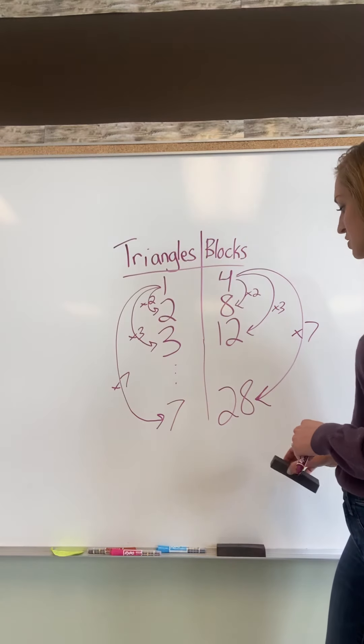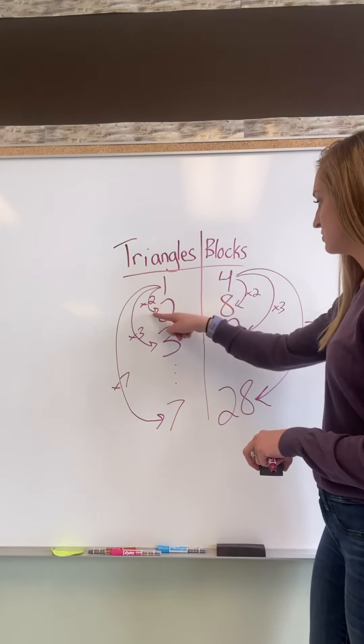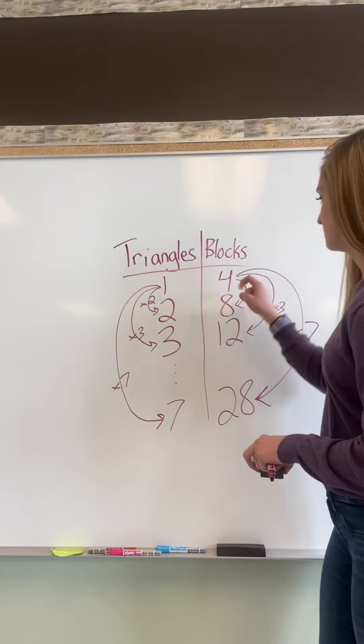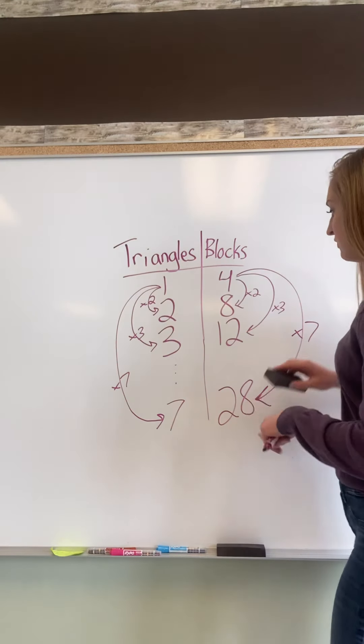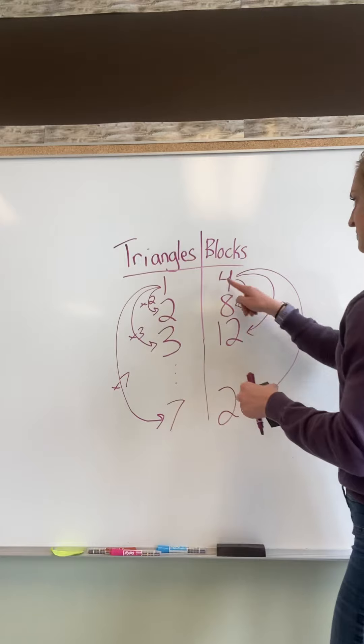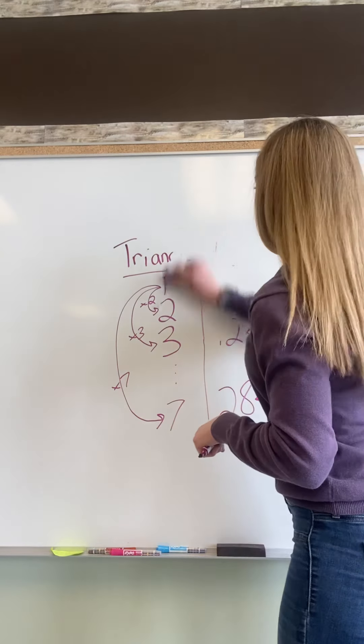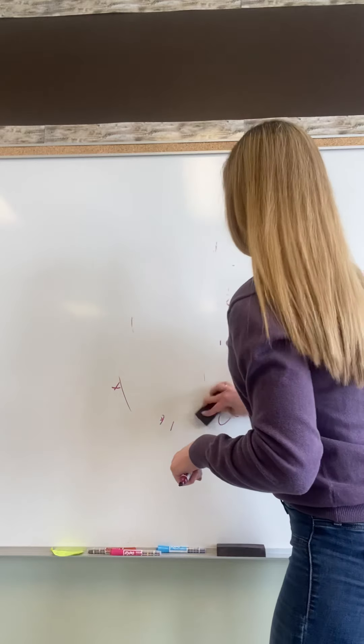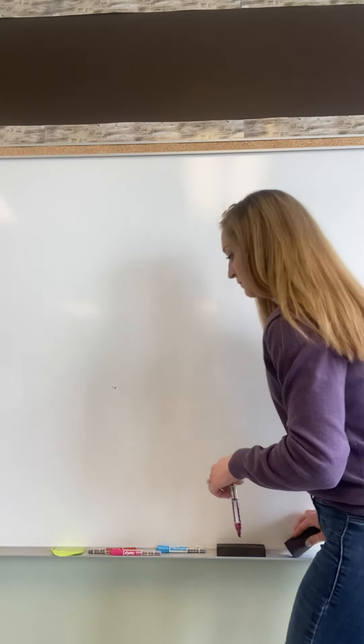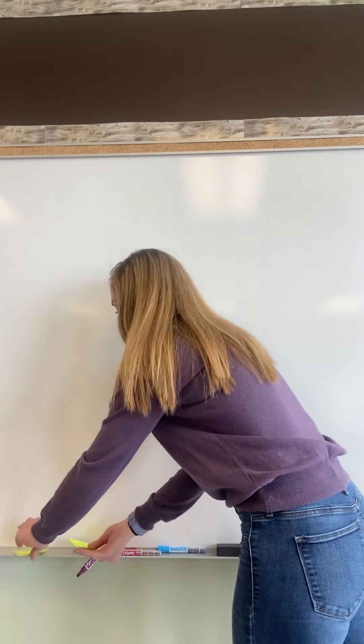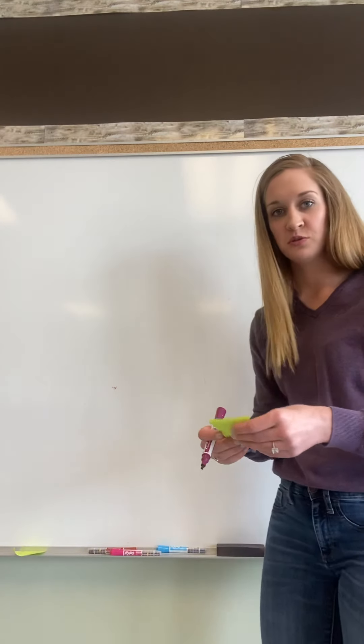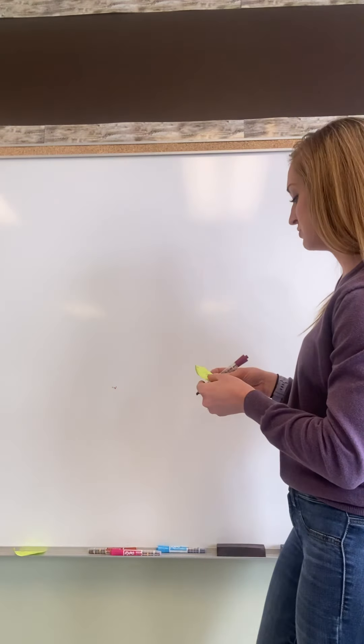So this is a ratio table again because if I'm multiplying this by two, I'm multiplying this by two. I'm multiplying this by three, this by three. So if I was multiplying this by two and this by six, it's not a ratio table. Okay, so now I'm going to put up two tables and we're going to discuss if they are ratio tables or not.